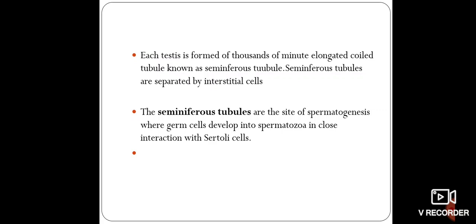The seminiferous tubules are separated by cells called interstitial cells. Each seminiferous tubule is covered by a membrane called the basement membrane, and this basement membrane is lined by germinal epithelium. From this germinal epithelium, primordial germ cells or primary germ cells arise. Supporting nutritive cells called Sertoli cells are also present in the seminiferous tubules. The primordial germ cells give rise to spermatids, which are then developed into mature sperm by the process of spermiogenesis.